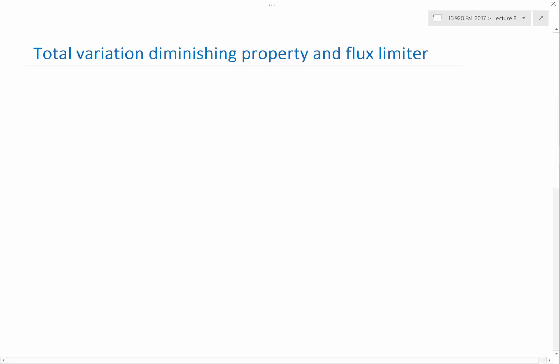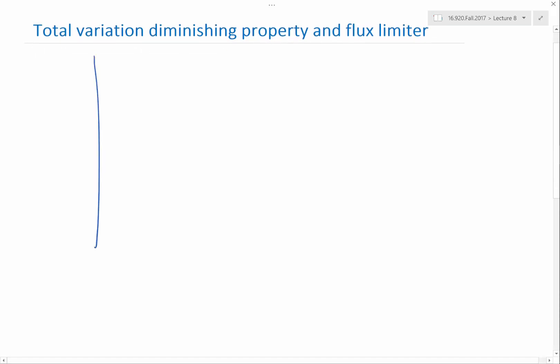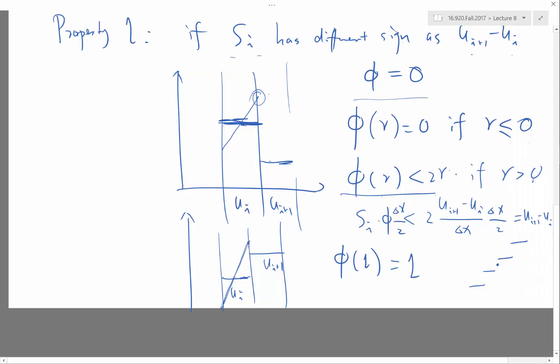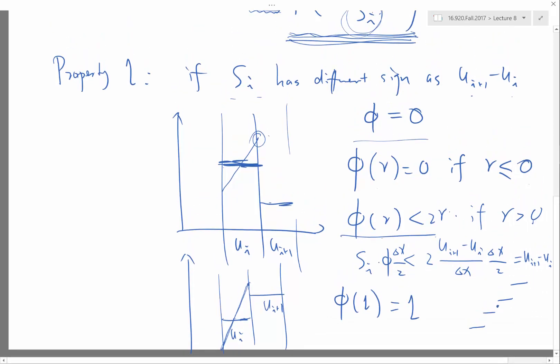There are also similar properties you would need to have this limiter, both non-oscillatory and second order. For the second property, what do you set P equal to? P is less than 2R? P has to be less than 2R, right?